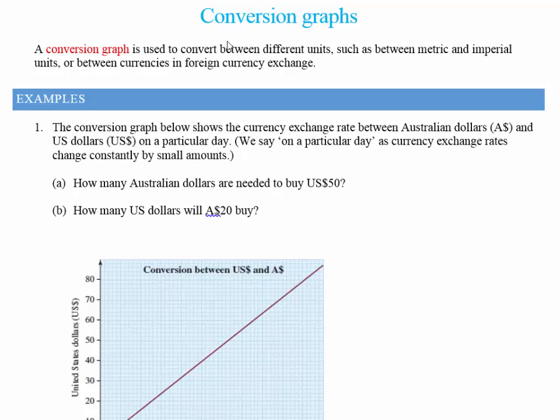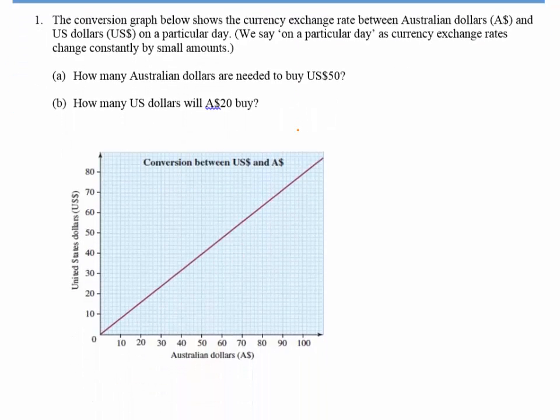So what we're going to be looking at today are simply conversion graphs. Conversion graphs are straight line graphs which let us convert between two different units, so you can convert between metric units and imperial units, or most likely you see it between foreign currencies, like between the Australian dollar and the US dollar or the Australian dollar and British pounds.